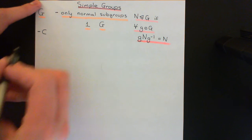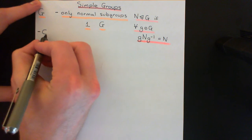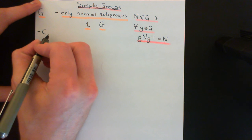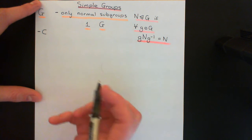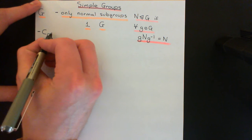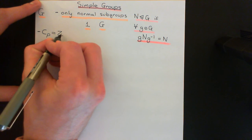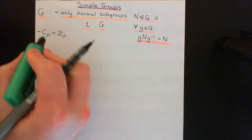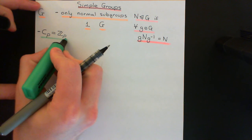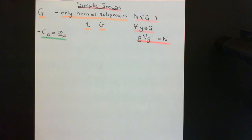A massive family of finite simple groups are the cyclic groups on sets of a prime number of elements: the Cp groups, also called the Zp groups, where P is some prime — 2, 3, 5, 7, 11, 13, 17, 19, etc. These are groups that contain all of the cyclic permutations of these sets of prime elements.